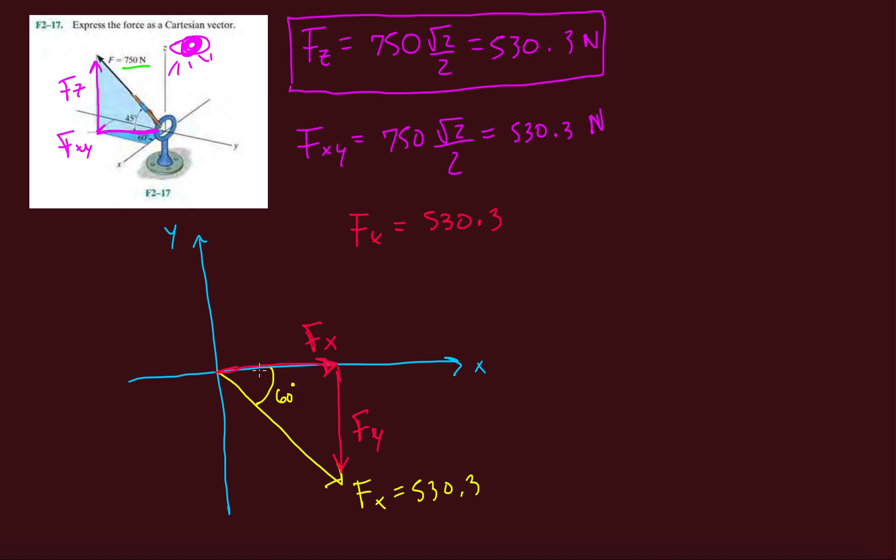And it should be coming natural to you whether it's going to be cosine or sine. Remember that in this case that adjacent side is cosine. So it's 530.3 cosine 60. And our Fy will be negative 530.3 sine 60. Alright, 530.3, so that'll be 265.15 Newtons.